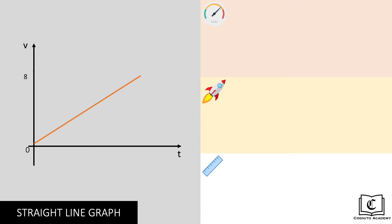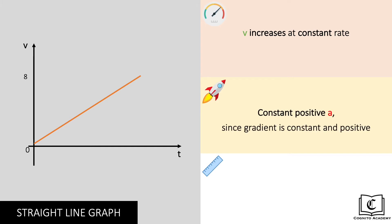Moving on, in this graph, we can see that the velocity here isn't constant anymore. Instead, it is increasing at a constant rate from 0 to 8 meters per second. Since it is a straight line graph pointing upwards, gradient is constant and positive, and the object is undergoing constant positive acceleration. Displacement is positive due to the area under the graph being positive.